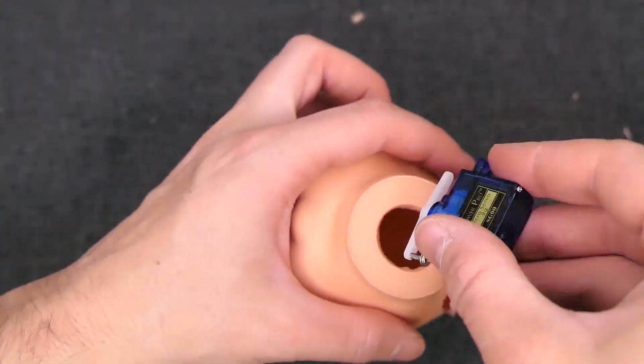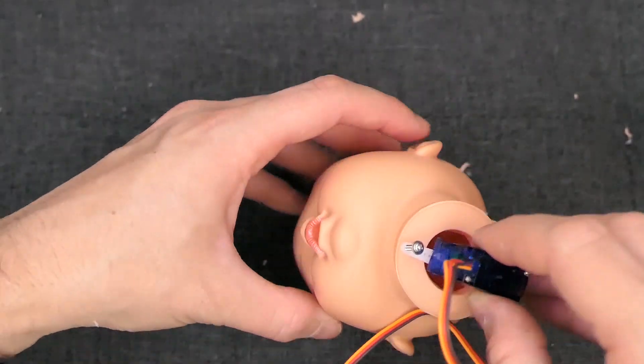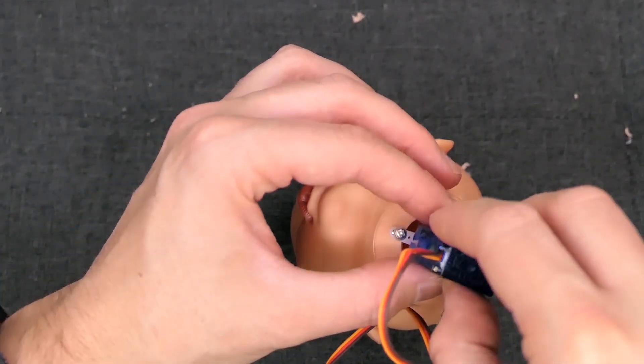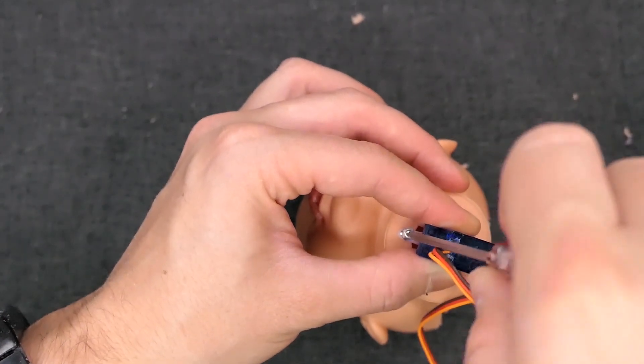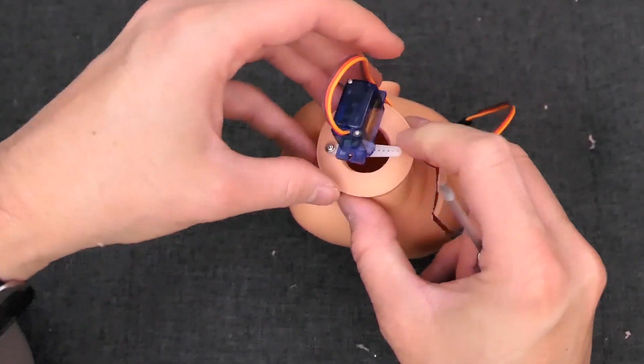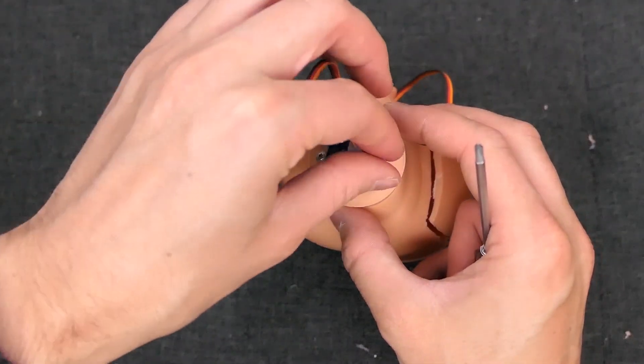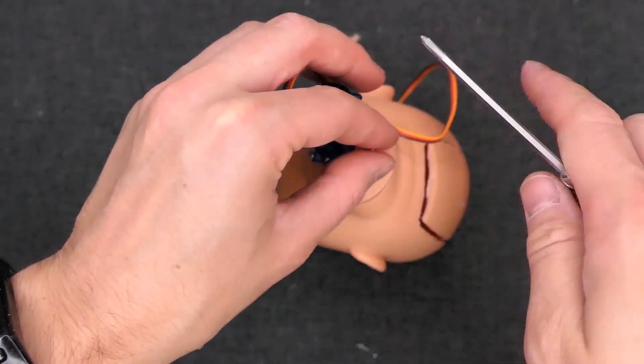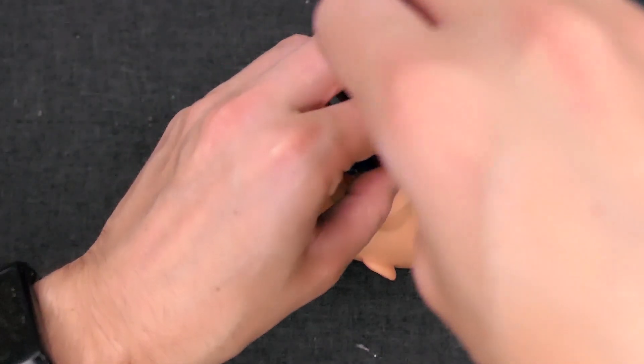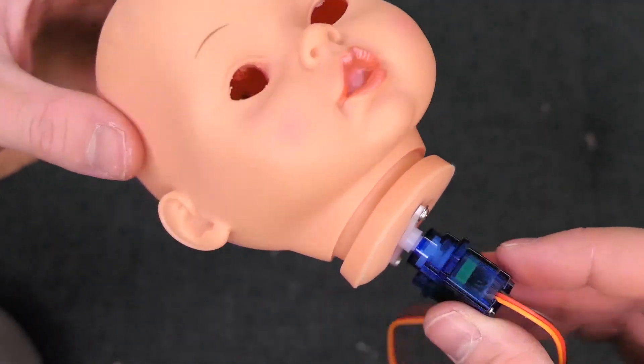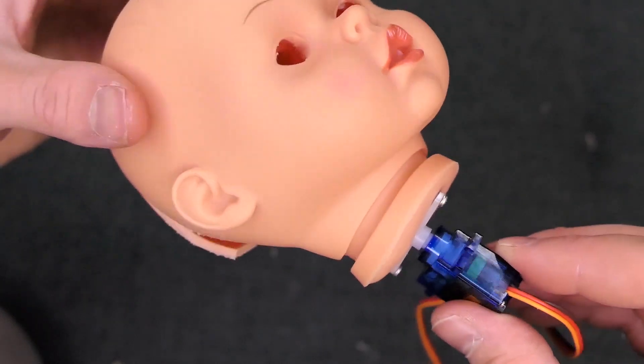Position this on the underside of the doll's head. Align like so and screw in place. Check that the servo moves freely and that the doll's head can turn to the left and to the right.